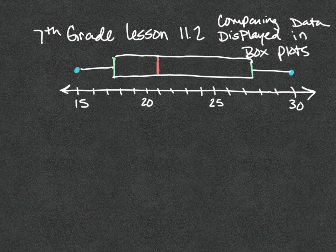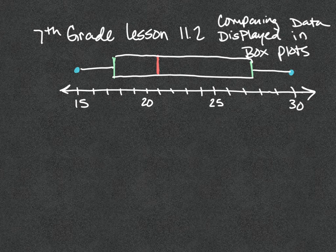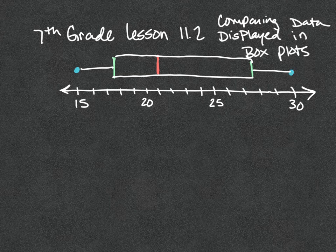Let's say we're looking at the number of points a high school basketball player scored during the games he played throughout his season, organized on a box plot. This value over here represents the highest number in the whole data set, off the whisker — that's 30. So he had one game where he scored 30 points. And this point over here is the lowest value, which is 15 — that was his worst game.